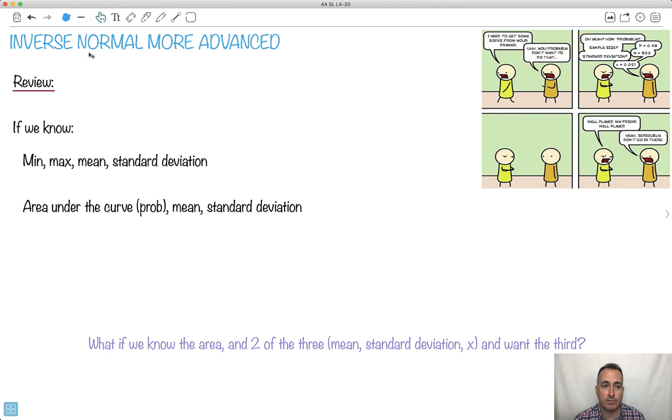Let's do some more advanced inverse normal work. I like this joke right here. I need to get some socks in my drawer. You probably don't want to do that. Oh yeah? How probably? 0.98. Sample size? 500. Standard deviation? 0.021. Notice that's a very high probability, lots of sample and a very small standard deviation. That tells you it's a very good mean. Well played.